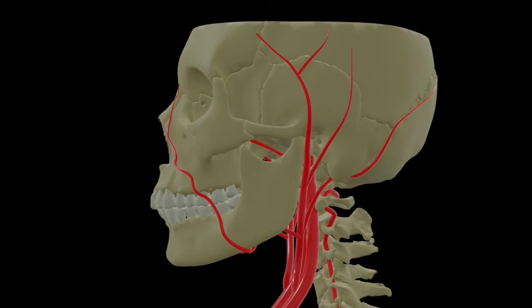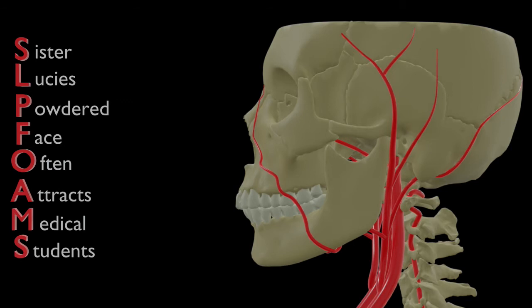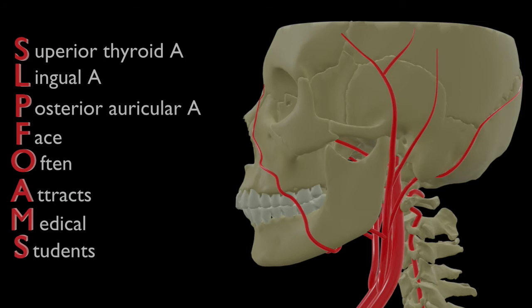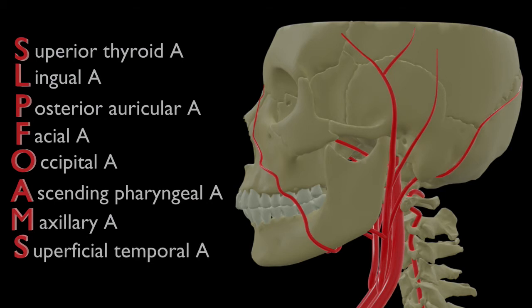So what are these eight branches? During our first year days in Madras Medical College there was a mnemonic which was very famous, which helps to remember the eight branches of the external carotid artery. The mnemonic is: 'Sister Lucy's Powdered Face Often Attracts Medical Students.' S stands for superior thyroid artery, L for lingual artery, P for posterior auricular artery, F for facial artery, O for occipital artery, A for ascending pharyngeal artery, M for maxillary artery, and S for superficial temporal artery.